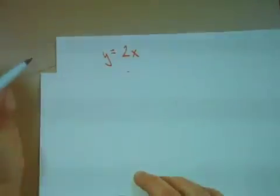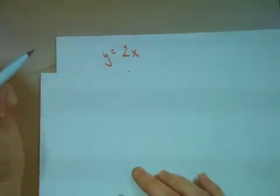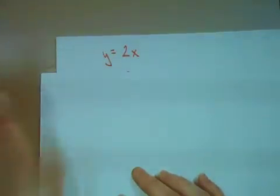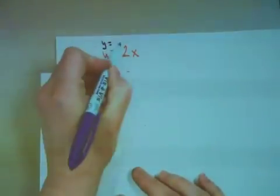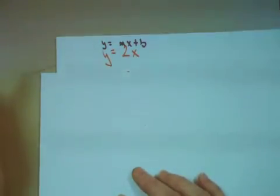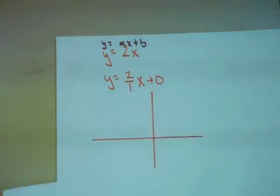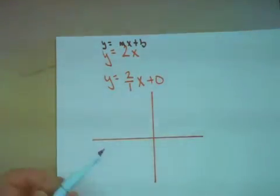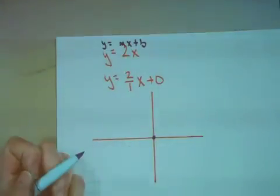Let's graph the equation y equals 2x. What value should I start with? Recall this should be written in y equals mx plus b form, and we always start with a b. My b value is an implied 0, so I should start from 0, the origin.